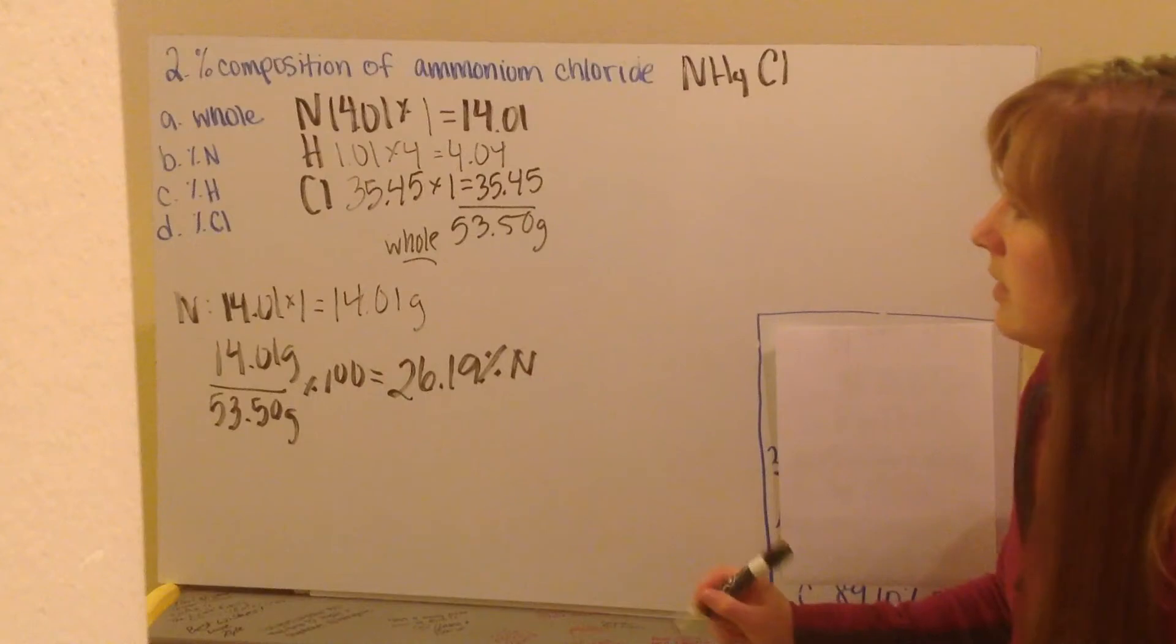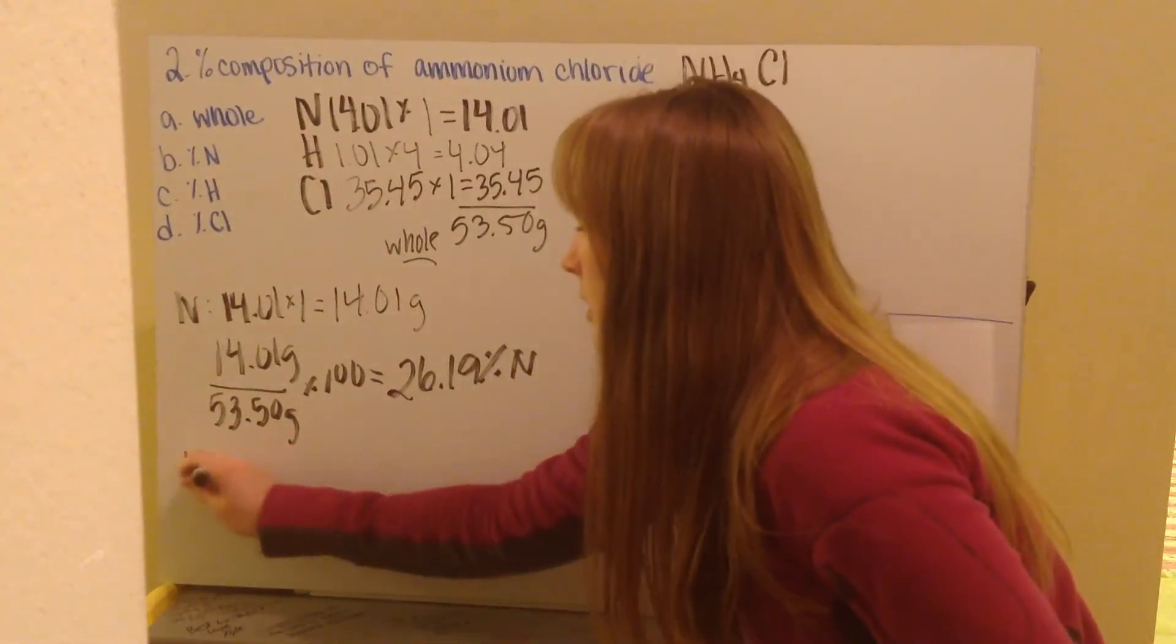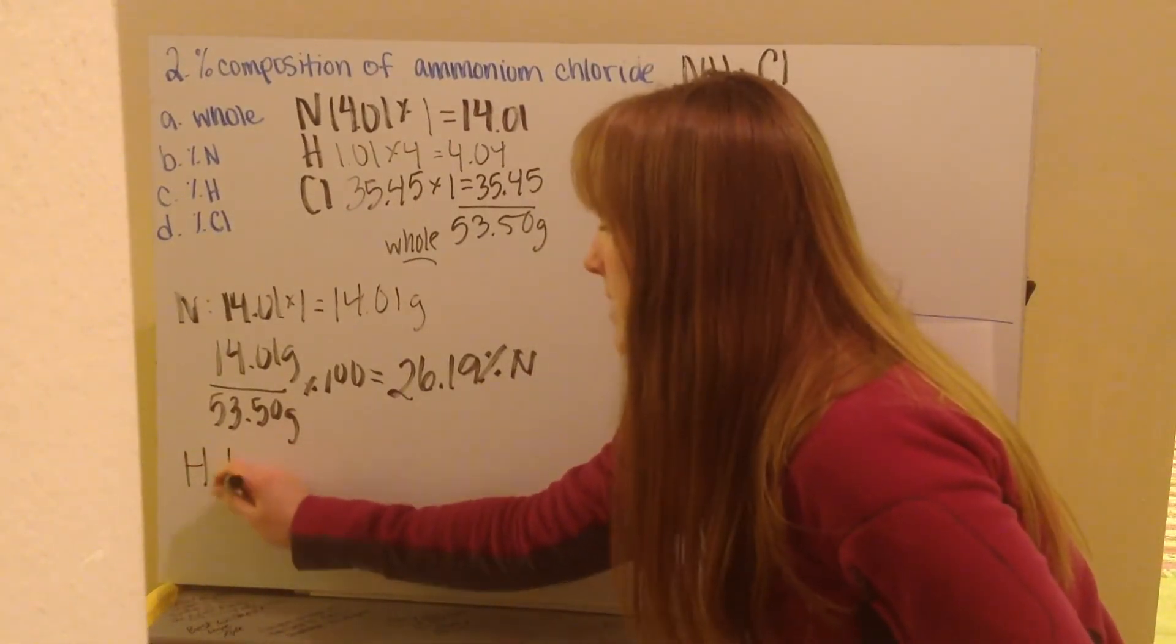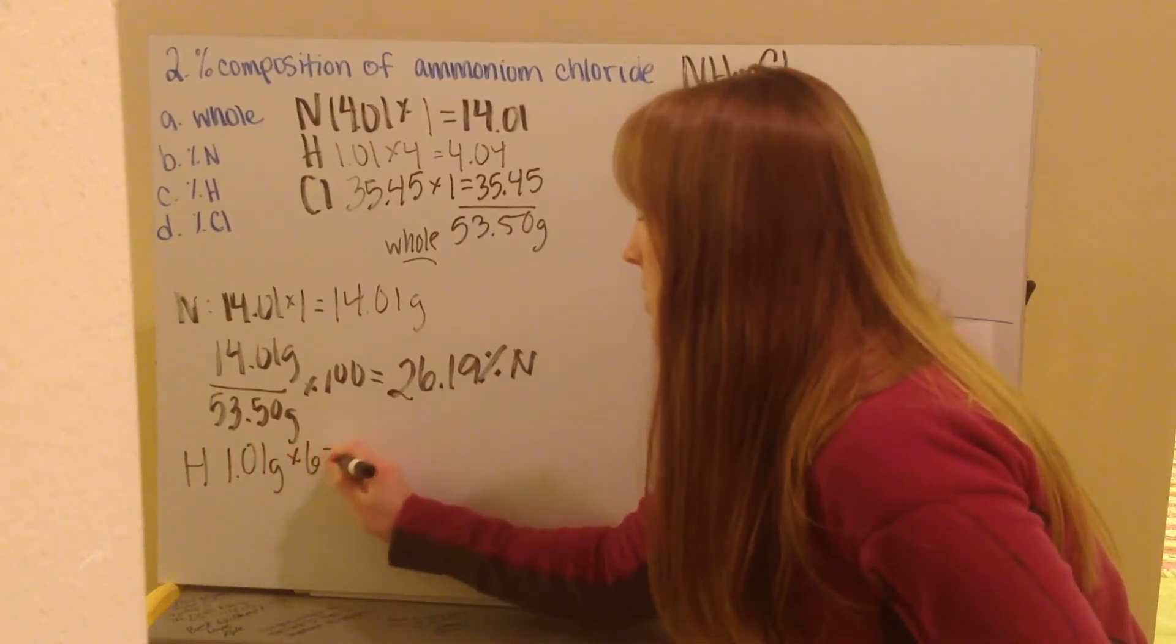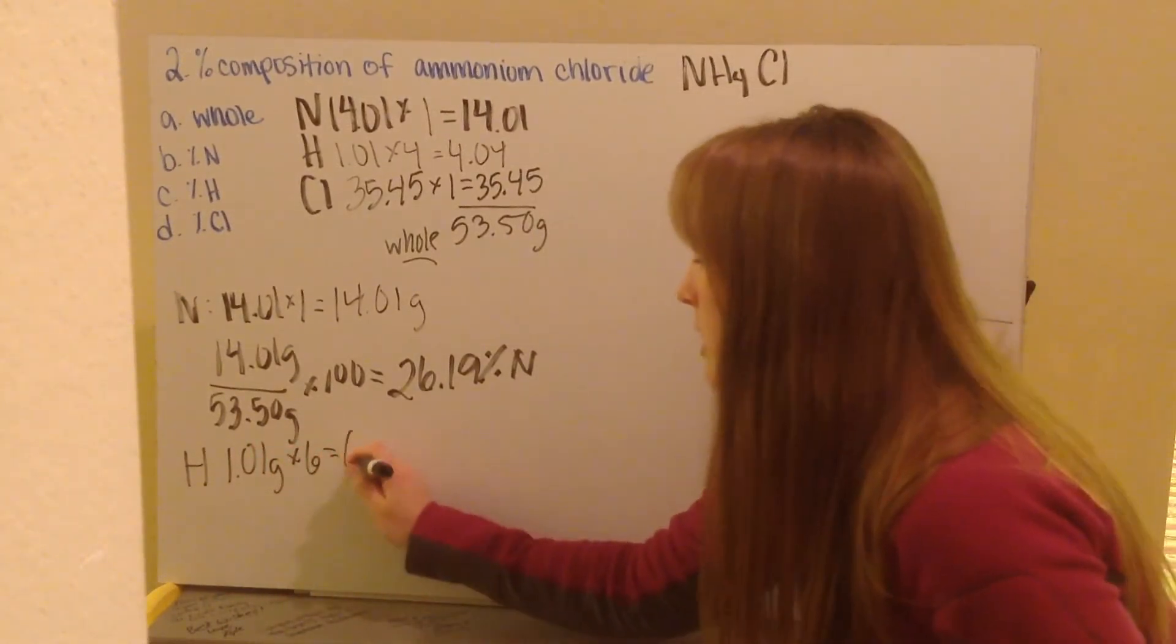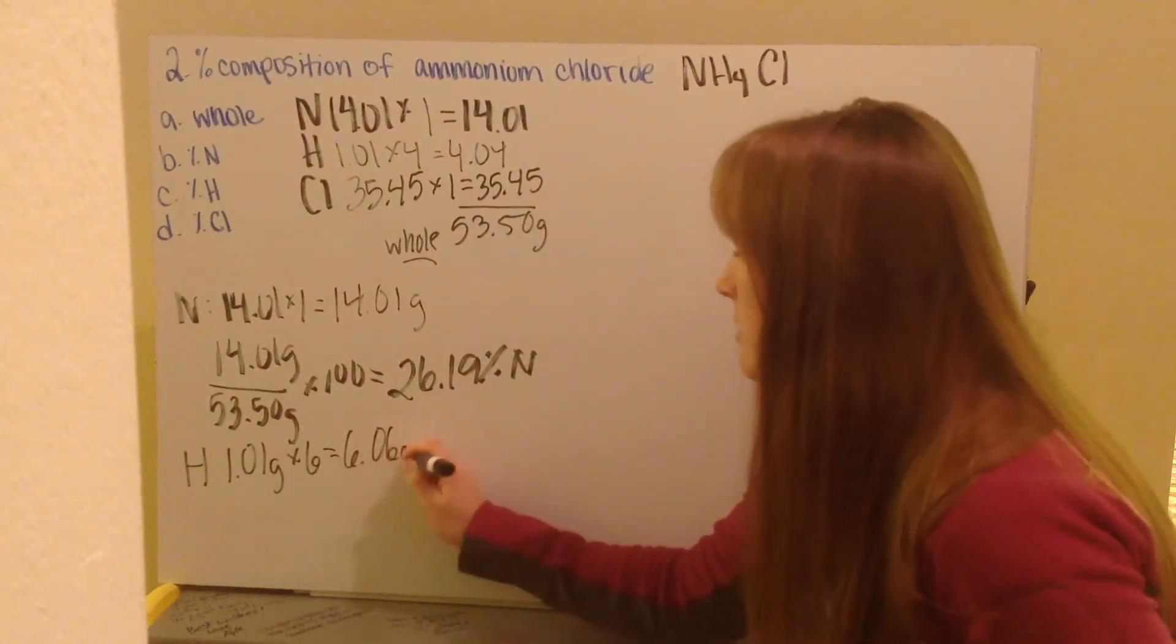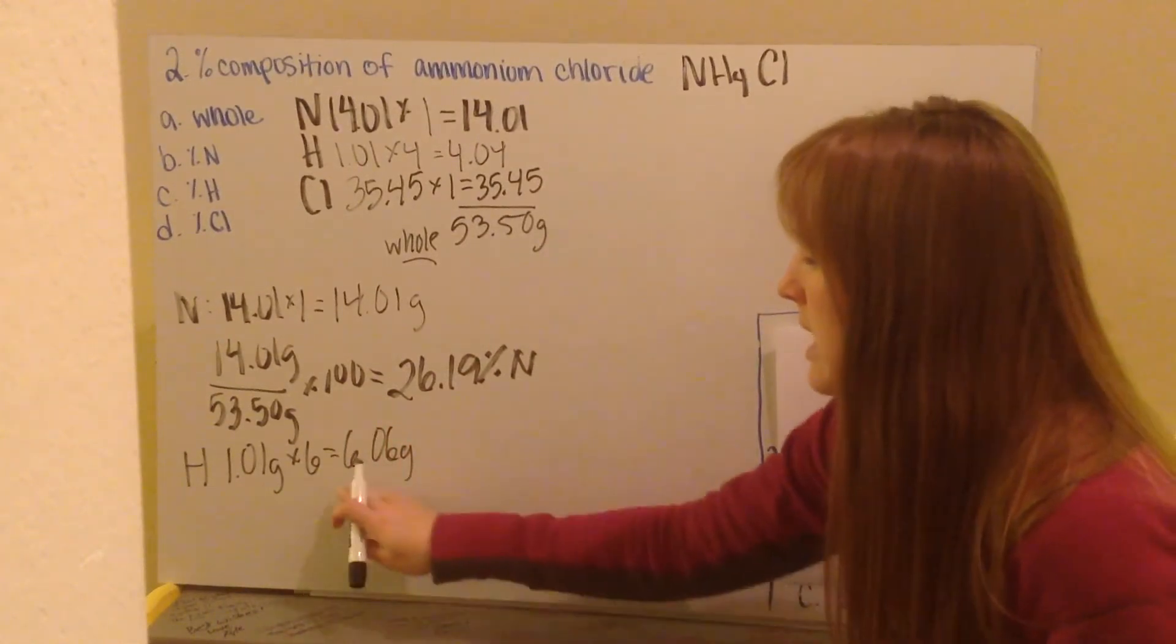Then I do the same thing for my hydrogen. For hydrogen, my mass of a hydrogen is 1.01 grams, and I have 4, which gives me a total mass contribution of 4.04 grams. I take this value and divide it by my total mass of 53.50 grams times 100.